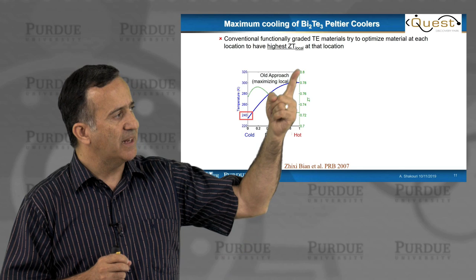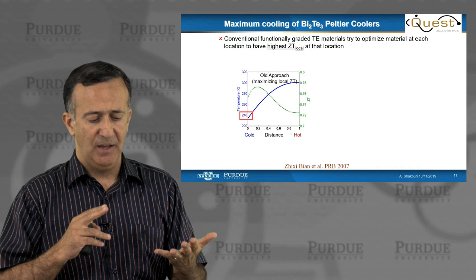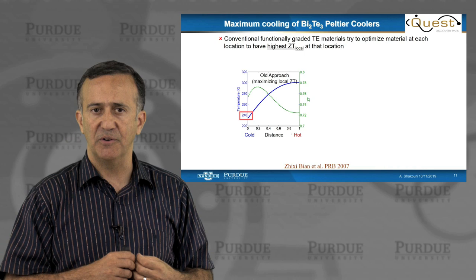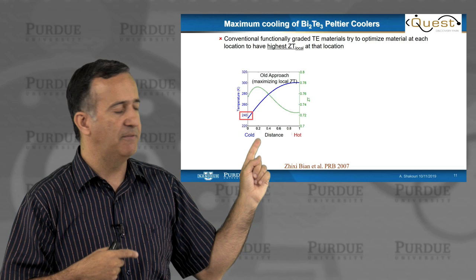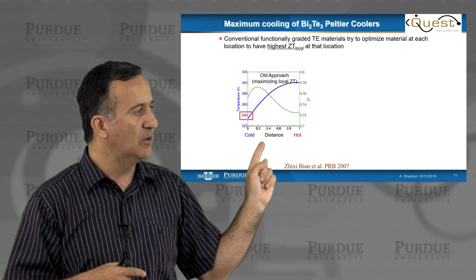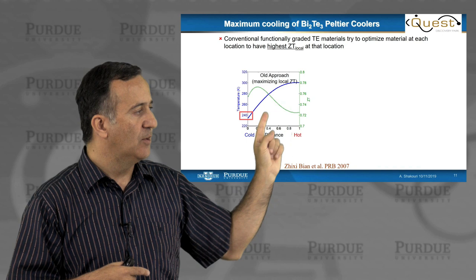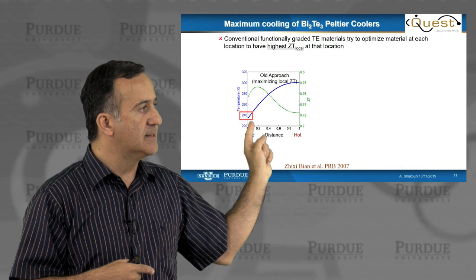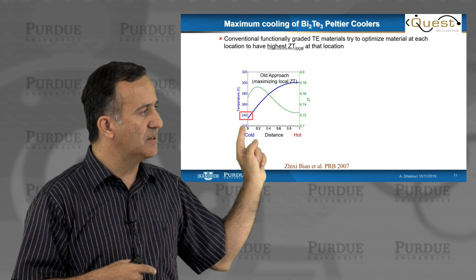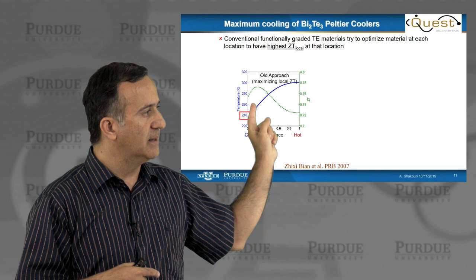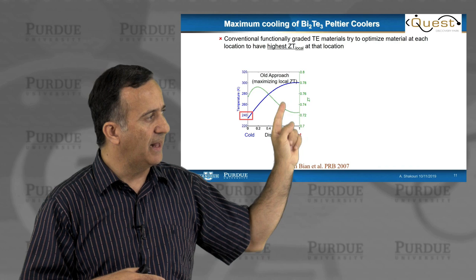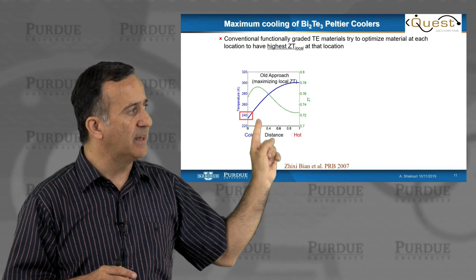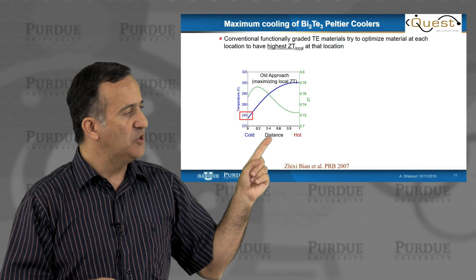Later on, Bion and colleagues looked at a realistic bismuth telluride material. They took a bismuth telluride pellet coolers that are commercially existing, and they looked at how you can change the doping to change Seebeck versus electrical conductivity. People knew how to do that, and then they calculated through an iterative method what will be temperature profile going from the cold to the hot side if you maximize local ZT. So at 240 degrees at the cold side, ZT is about, in this case, 0.75. And as you go from 240 to room temperature on the hot side, the ZT changes slightly between 0.72 and 0.78, but it's relatively high value everywhere. So you see the maximum cooling is about 60 degrees in this case.